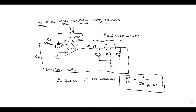The desired amplitude of oscillations can be obtained by connecting Zener diodes back-to-back at the output of the amplifier. This maintains the output V_out within a particular range of amplitude, controlling the signal strength.